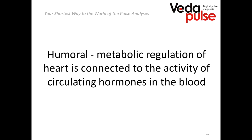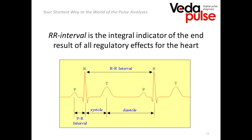Now let's talk about VEDAPulse device operation. At the basis of VEDAPulse working is the ECG recording. As we all know, we make a recording during 5 minutes. During this time the program registers heart intervals — cardiac cycles — and shows them as RR intervals. One heart interval includes both a full systole and diastole. This means that the RR interval includes all the time the heart needs to contract and then to relax. So the RR interval reflects all regulatory influences that the heart feels.